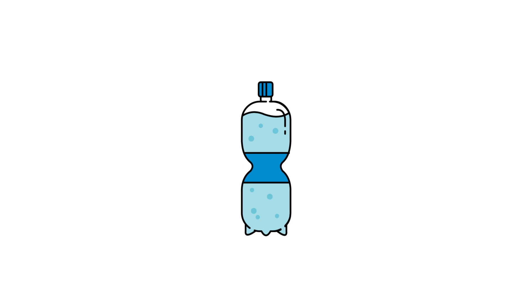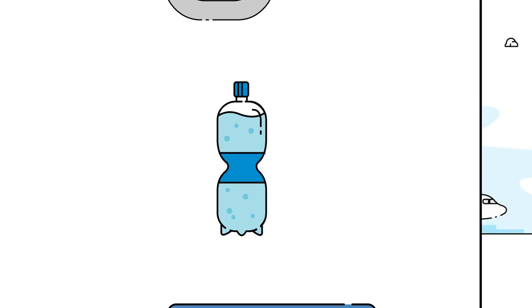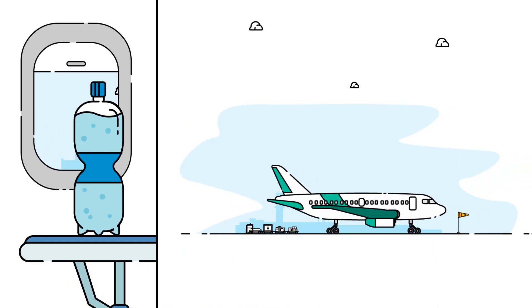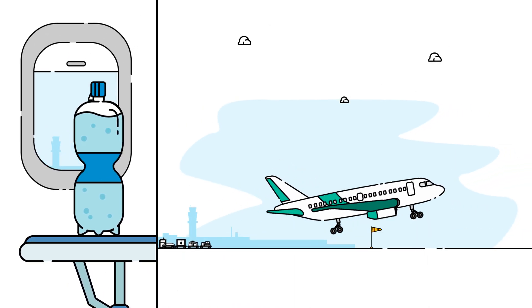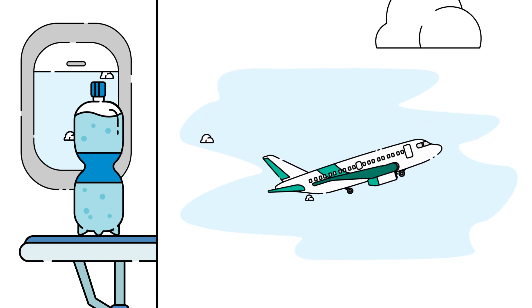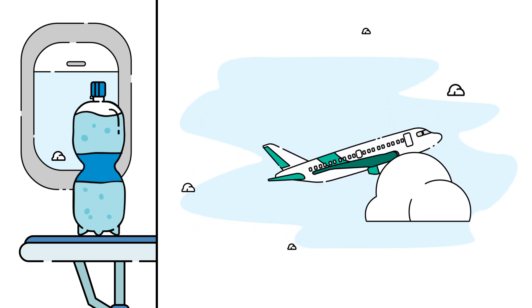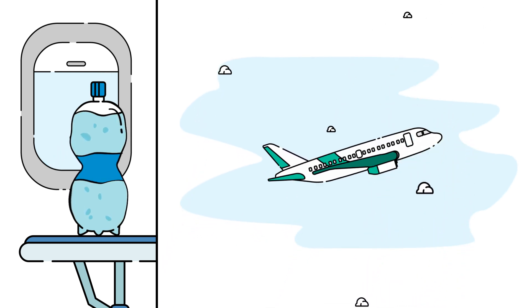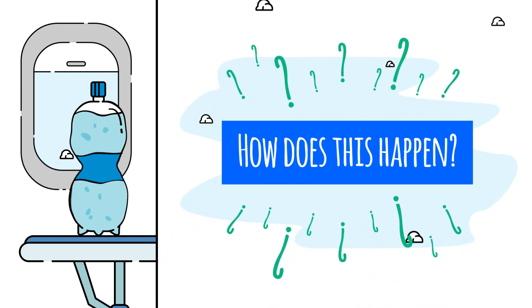Imagine what happens to bottled water when you fly in an airplane. At take-off, the water bottle looks normal. But as the plane rises and air pressure drops, the bottle expands and becomes bloated. How does this happen?